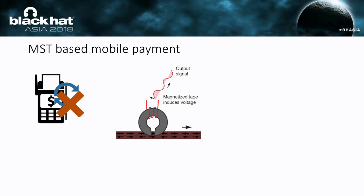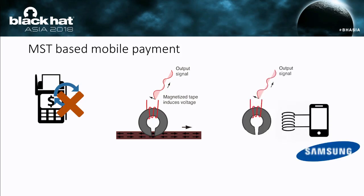The magnetic head consists of a coil and a magnetic ring. We know that swiping a magnetic strip will generate a magnetic field. The coil, when exposed to a varying magnetic field, will generate electrical current. The current is the signal representing the data. The company devised MST based on this principle.